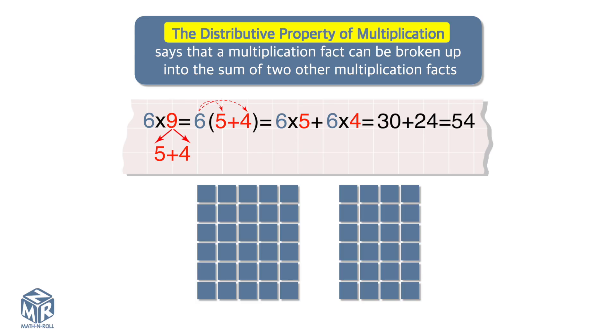One array has 5 columns, and the other array has 4 columns. 6 times 5 equals 30. 6 times 4 equals 24. 30 plus 24 equals 54.